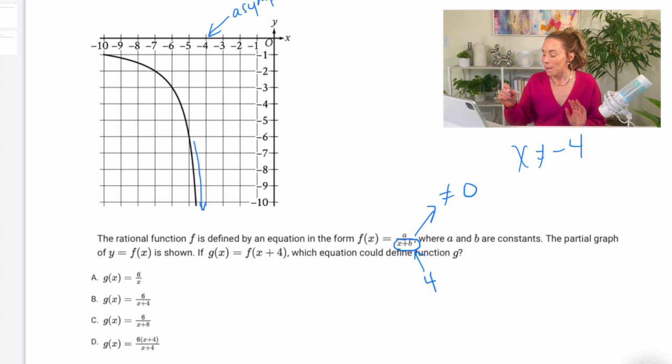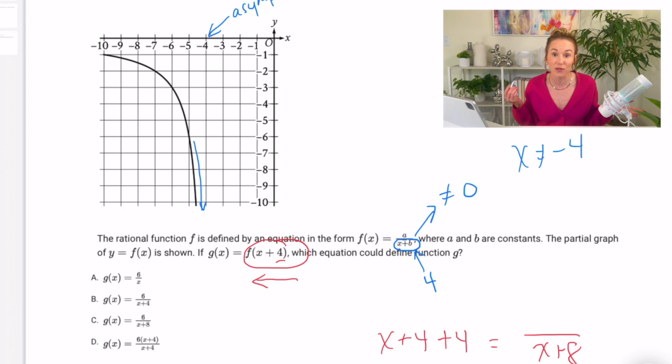So that means that b has to be 4. Okay, that being said, now on g(x) they're saying that they're going to add 4 to x. When you add 4 to x, it's actually going to translate to the left. But anyways, what does that mean? Well, instead of adding 4 we had x plus 4. Now we're adding 4 more to x, so we'll really have an x plus 8 in the denominator. So I'm just looking for an answer that has x plus 8 in the denominator because I already knew b was 4. So the answer is C.